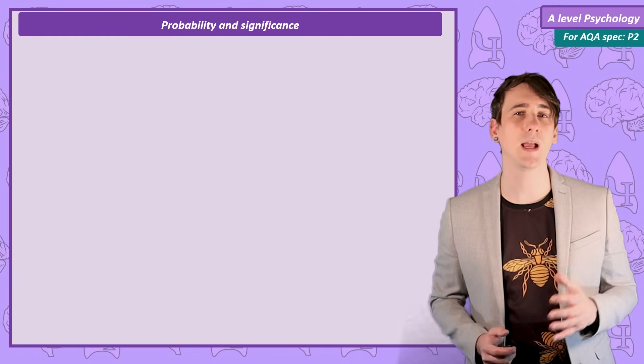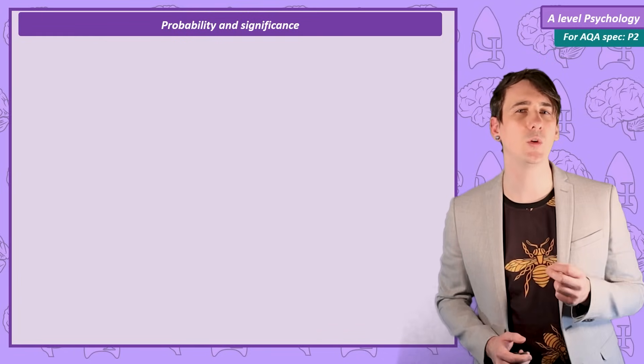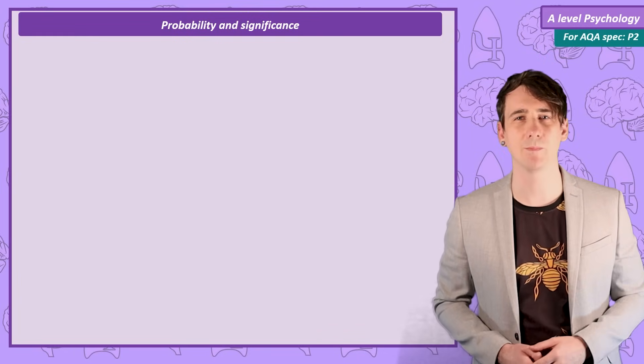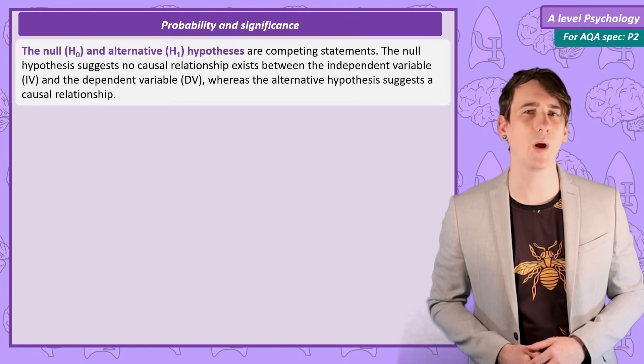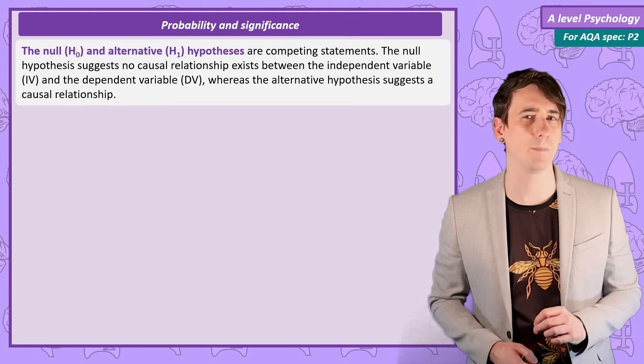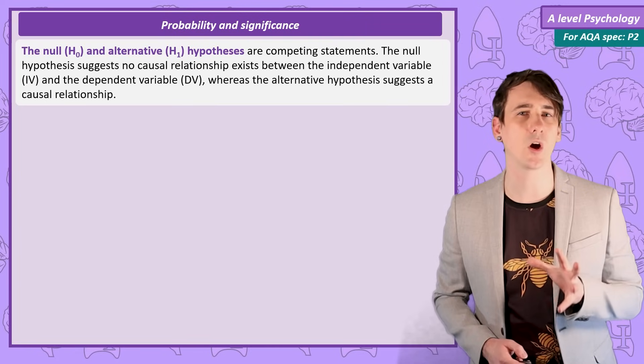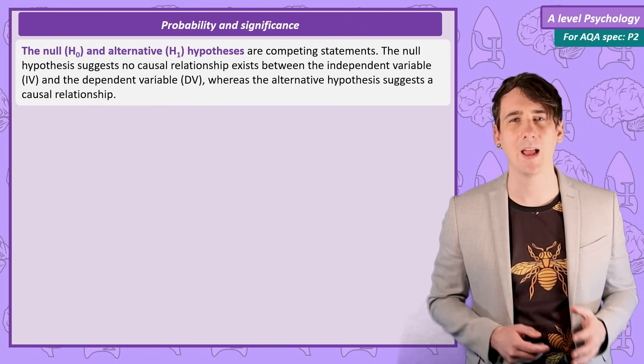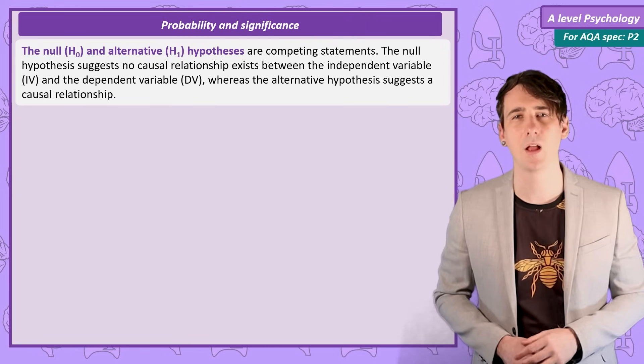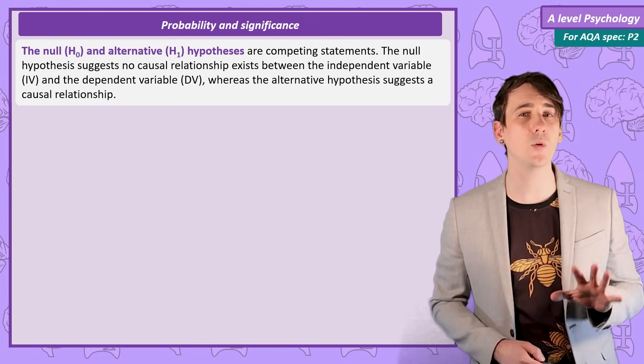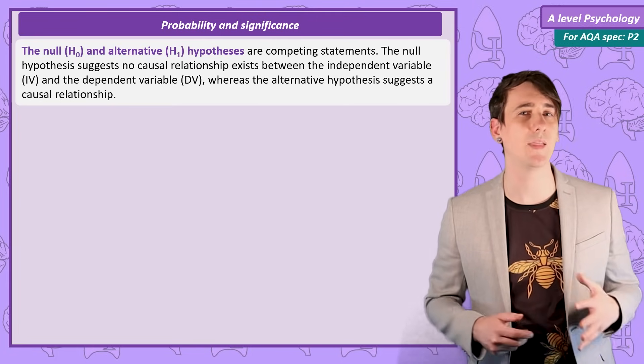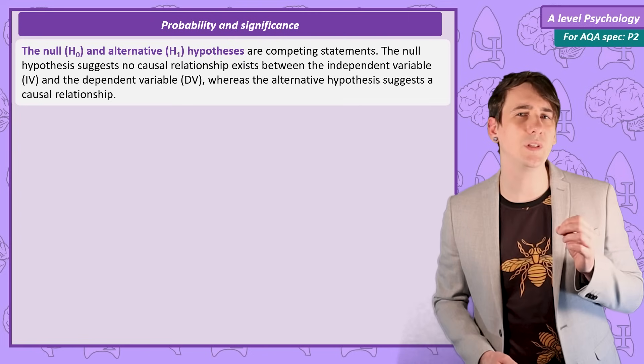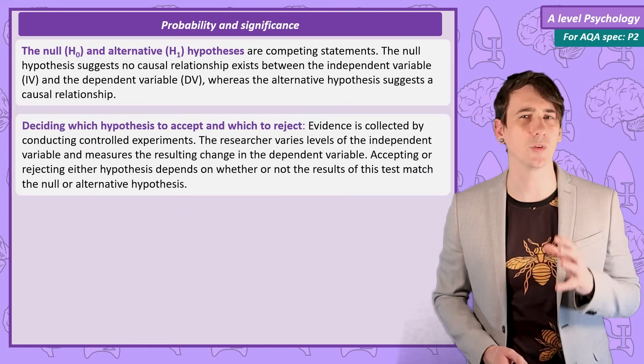If you think back to our aims and hypothesis video, you might remember there are two competing hypotheses that researchers create before collecting data. The null hypothesis, H0, and the alternate hypothesis, H1. These two hypotheses are competing statements about the causal relationship between the independent and dependent variable. The null suggests there is no causal relationship between the independent and the dependent variable, and the alternate suggests there is. So how do we decide which one to accept and which one to reject?